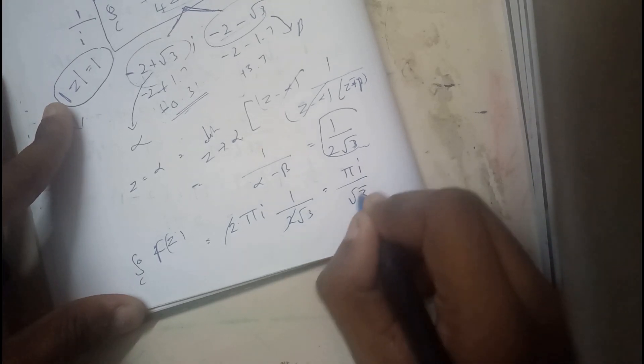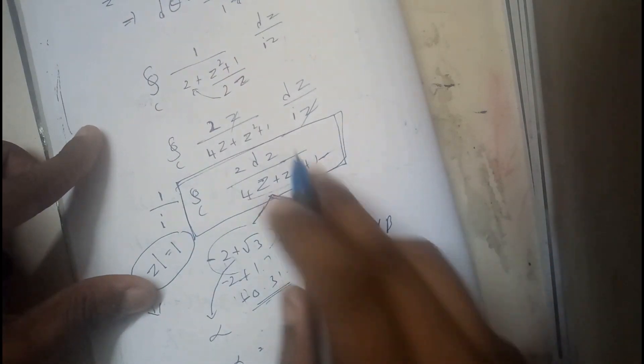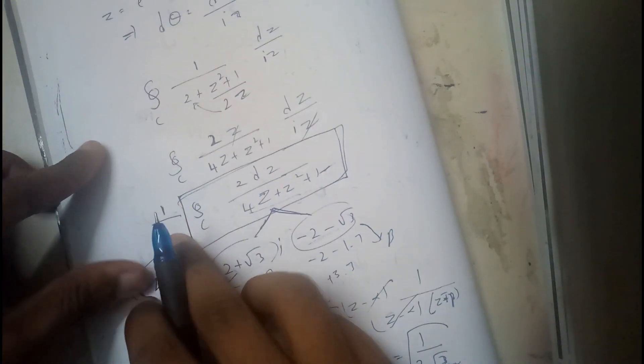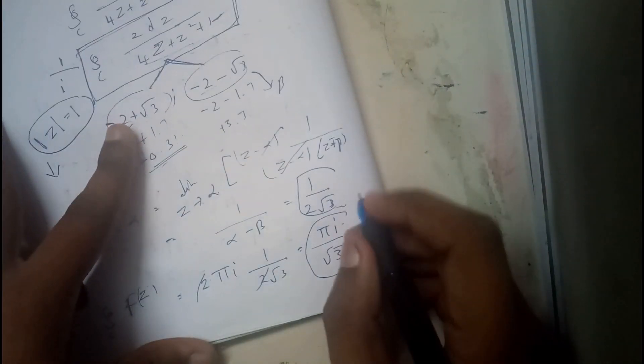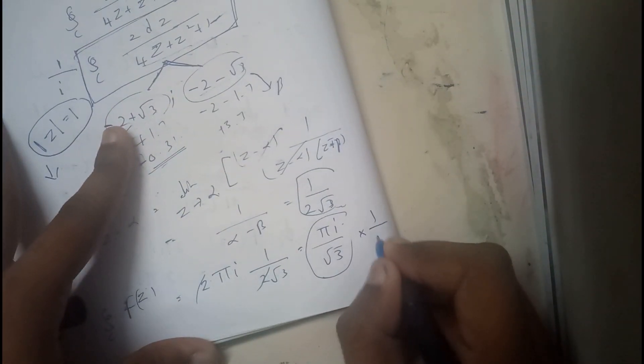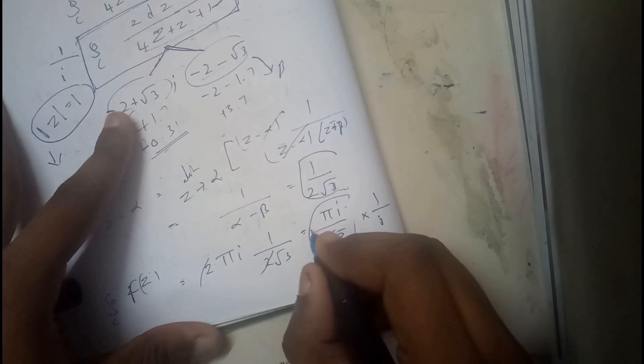So πi/√3. So this is the answer for this. So for this answer you need to multiply 1/i to get the given question. So for this times 1/i, it is nothing but...